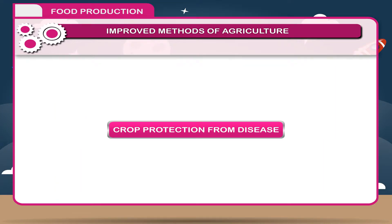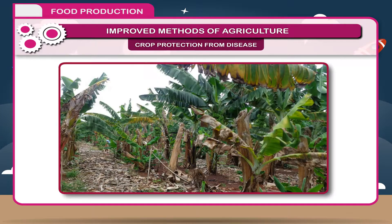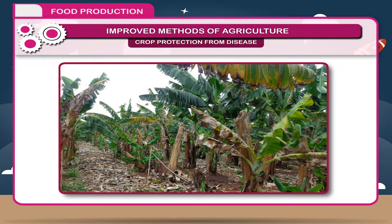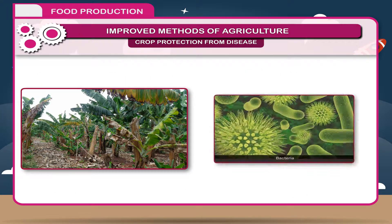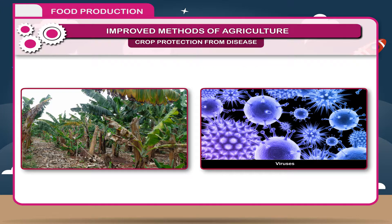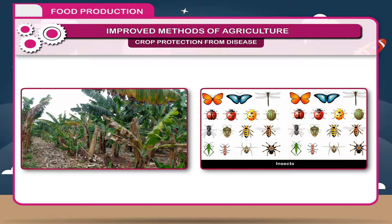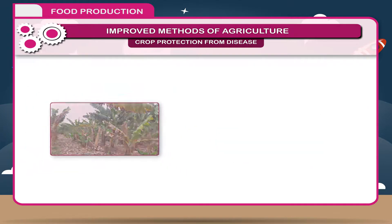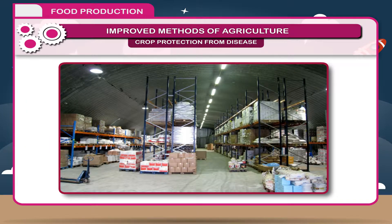Crop Protection from Disease. In India, there is about 10% loss in yield due to crops' diseases alone. Crops should be protected from the diseases caused by fungi, bacteria, viruses and insects, and accordingly suitable pesticides should be used.